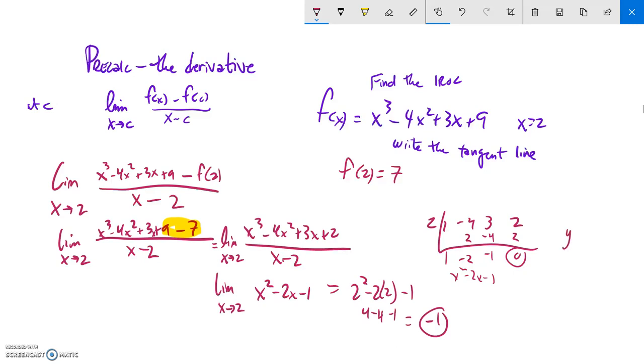So now what I'm going to do is write my tangent line. I can just use that and use the point-slope formula: y minus the y part of the point equals the slope times x minus the x part of the point.